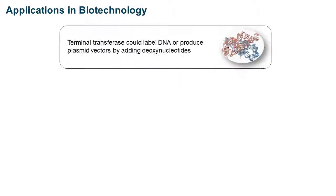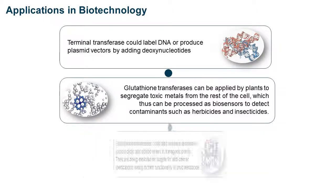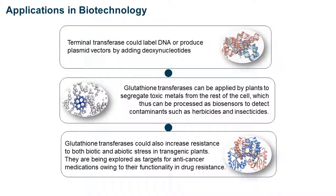Applications in Biotechnology: Terminal transferase can label DNA or produce plasmid vectors by adding deoxynucleotides. Glutathione transferases can be applied by plants to segregate toxic metals from the rest of the cell, functioning as biosensors to detect contaminants such as herbicides and insecticides. Glutathione transferases could also increase resistance to both biotic and abiotic stress in transgenic plants, and are being explored as targets for anti-cancer medications.